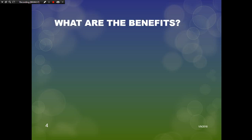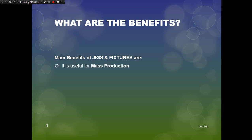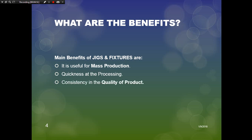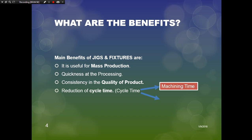The main benefits of jigs and fixtures: they are useful for mass production. With the use of jigs and fixtures, production time is reduced, cycle time is reduced, tool setting time is reduced, and the production rate is increased, allowing quick processing. The third benefit is consistency in quality of the product. Cycle time includes both machining time and non-machining time.